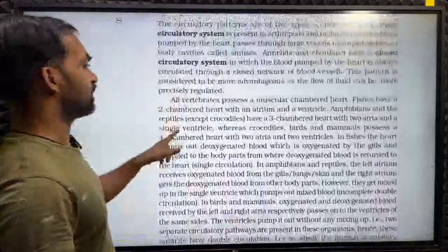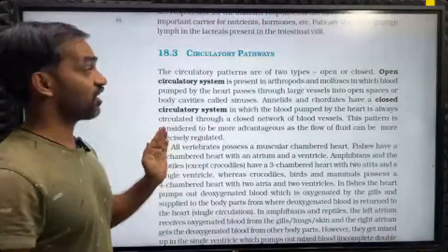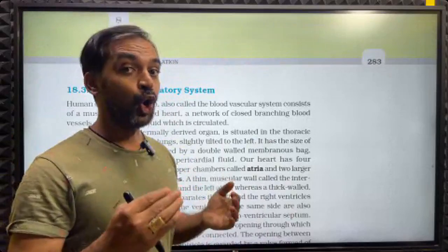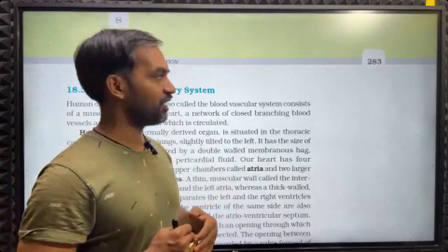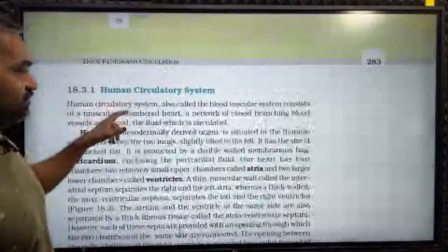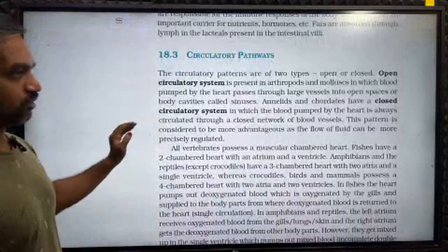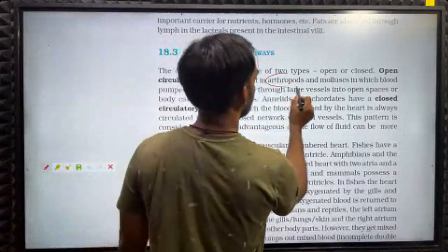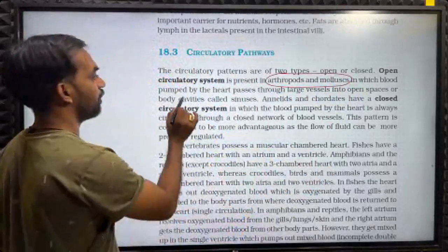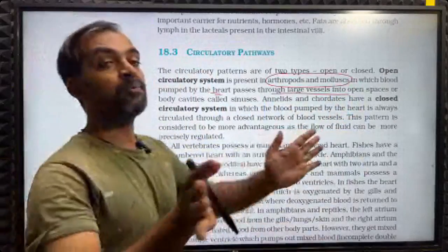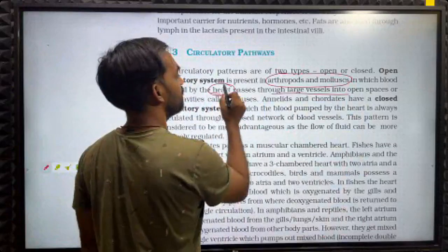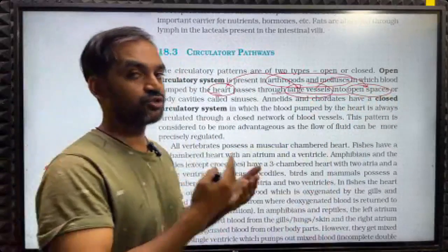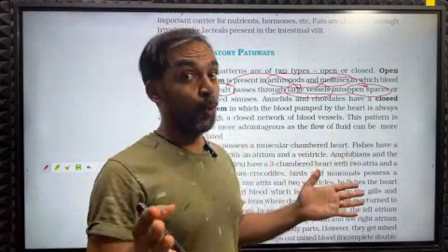Next, circulatory pathway. The circulatory patterns are of two types: open or closed. Open circulatory system is present in arthropods and mollusks, in which blood pumped by the heart passes through the large vessels into open spaces or body cavities called sinuses.